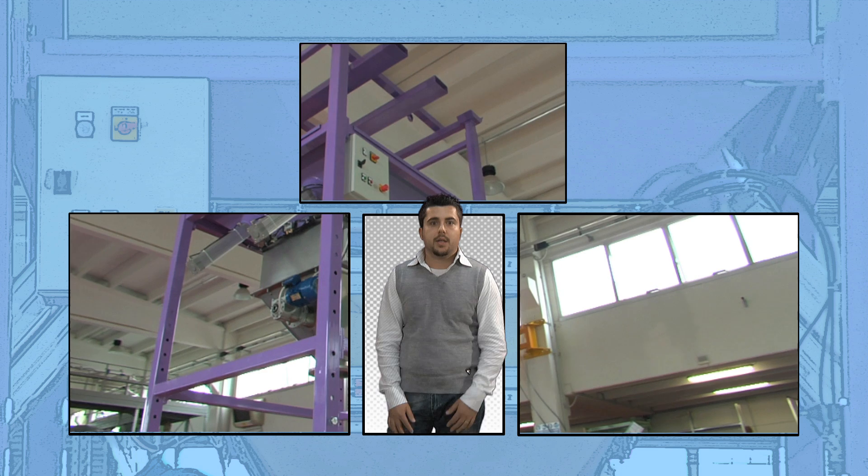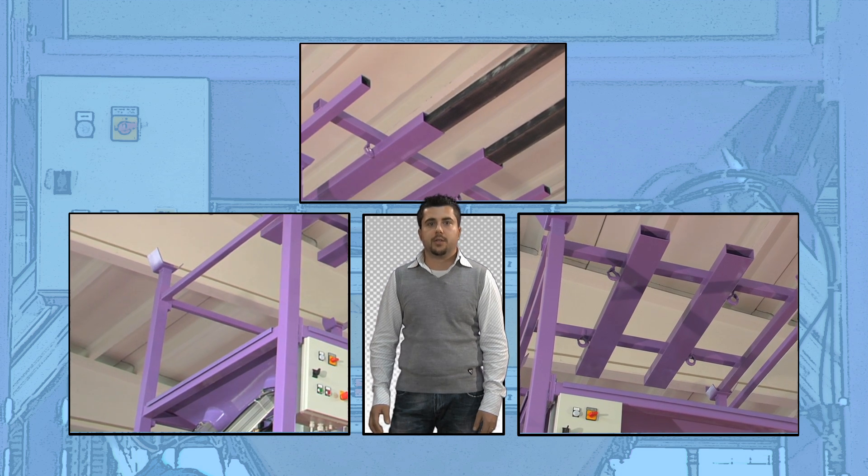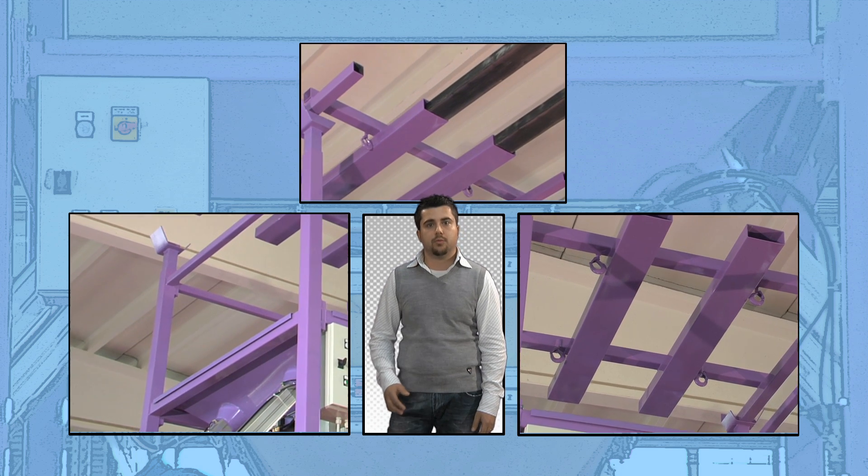How is a big bag unloader used? The big bag is hung on hooks by a forklift or hoist.